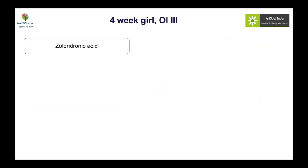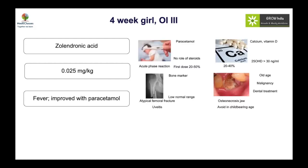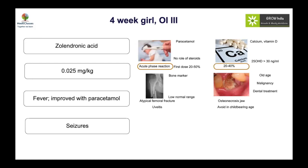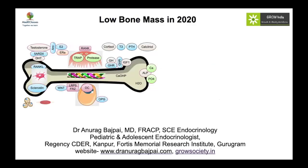A four-week-old girl with OI was recently diagnosed and started on zoledronic acid at a dose of 0.025 mg/kg, which is a standard dose. She developed fever, which is common and improved with paracetamol, but subsequently developed seizures due to hypocalcemia. This is important to understand because hypocalcemia is very common, particularly when there is calcium or vitamin D deficiency and if a higher dose is used. We need to be careful to start with a lower dose.